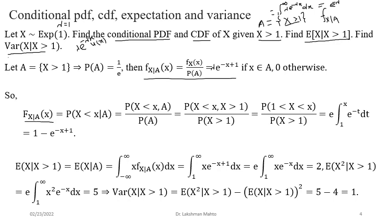With λ=1 given, λ cancels appropriately. P(A) = e^(−1) = 1/e. Now we look for the conditional CDF. From the definition, the conditional CDF is the conditional probability, which is the ratio of the joint probability that X ≤ x and X is in A, divided by P(A).